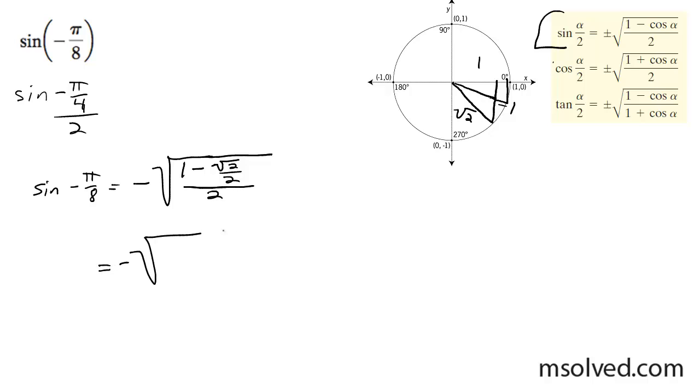So negative square root, common denominator is 2, minus root 2, divided by 2, divided by 2. And down here, negative square root 2 minus root 2, divided by 4.